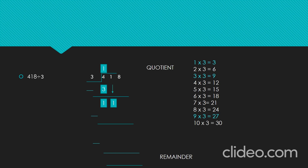Bring down 1. Now we have 11. Divide 11 by 3. By using the tables of 3, we get the product that is very near and less than 11, which is 9. So, write 3 in the tens place of the quotient and 9 below 11. Let's subtract 9 from 11 — that is, 11 minus 9 gives 2. Now, let's bring down 8. Now we have 28.